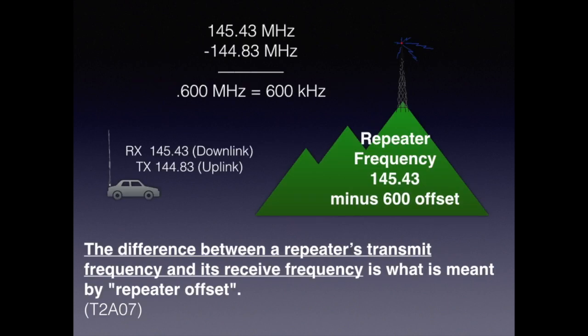Here's another question dealing with the repeater offset. The question is: the difference between the repeater's transmit frequency and receive frequency is what is meant by the repeater offset. You can see that the RX or downlink and the uplink frequencies differ by 600 kHz, which is indicative of the 2 meter band.